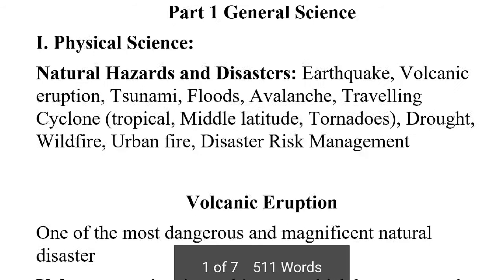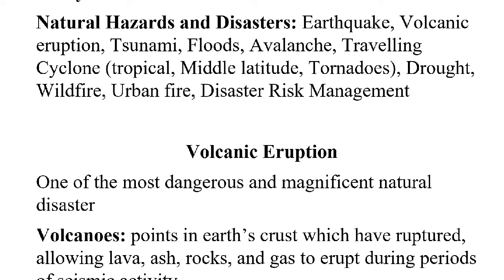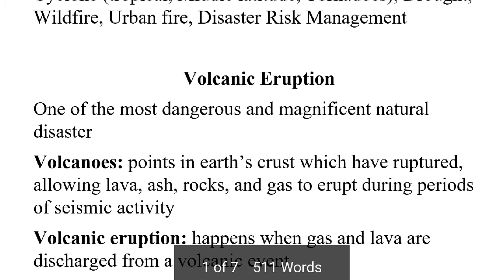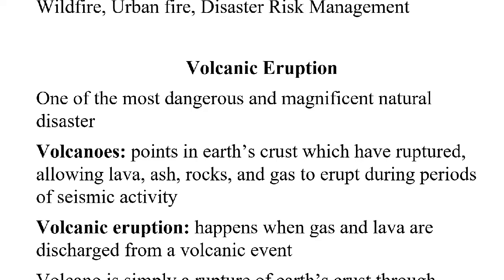Volcanic eruption is our second point today. Volcanic eruption is one of the most dangerous and magnificent natural disasters. You need to know how to talk about volcanoes. A volcano is like a mountain that produces molten material — like steam and lava — which erupts and bursts out. We call this a volcanic eruption.